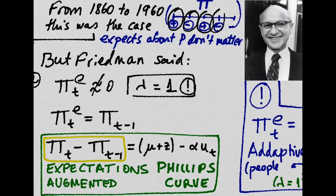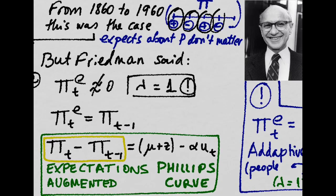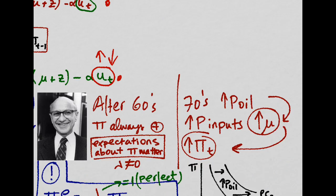But then, Milton Friedman, from the University of Chicago, came in and said that lambda could not be zero. Think about this.